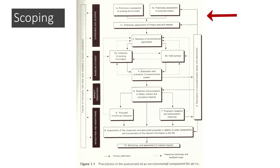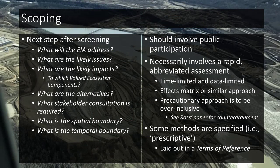Looking at the general flowchart: you do a preliminary assessment of both the receiving environment and the project itself to understand at a high level what risks need attention — not a full risk assessment, just flagging risks. Then you select your environmental parameters: what do we need to measure and assess? That's the scoping process in a nutshell.